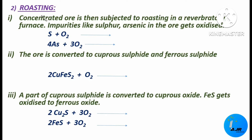The next step is roasting. The concentrated ore is subjected to roasting in a reverberatory furnace. The impurities such as sulfur and arsenic present in the ore get oxidized to sulfur dioxide and arsenic trioxide (As2O3).